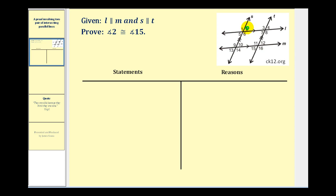Here's angle two and here is angle 15. Before we start, let's go ahead and see if we can devise a strategy for proving that angle two is congruent to angle 15.